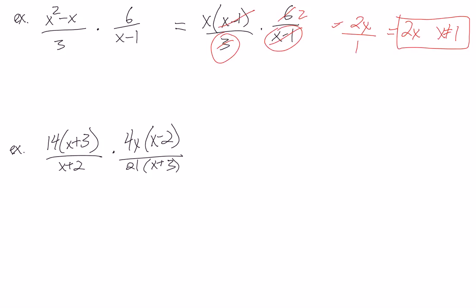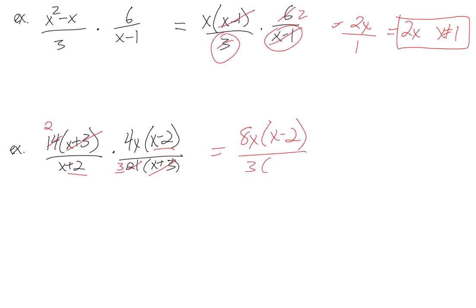The second example here has everything already factored, so we don't have to do any factoring and we're ready to cancel. We have an (X plus 3) that cancels. We cancel the 14 and 21 by dividing both by 7, giving us 2 over 3. We can't cancel (X plus 2) with (X minus 2) on the top because those aren't the same — you can't just cancel the X; it has to be all or nothing. So what's left over on the top is 8X and (X minus 2), and on the bottom we have the 3 and the (X plus 2).